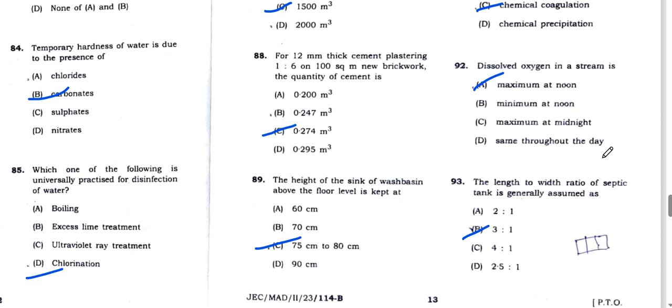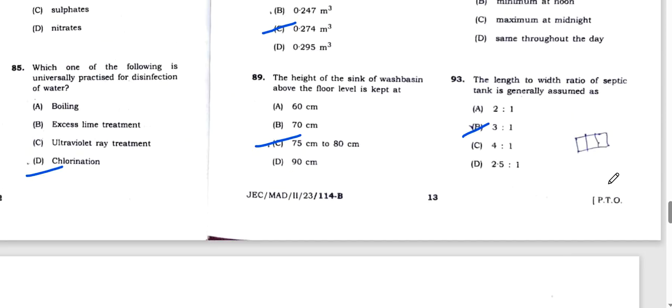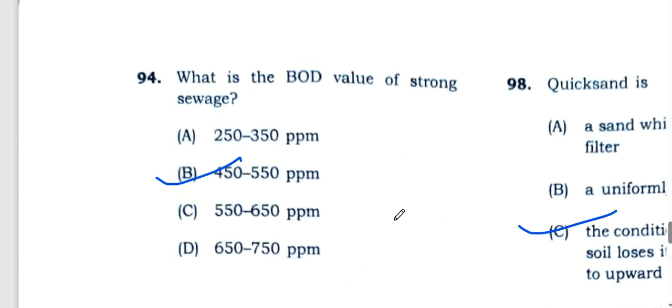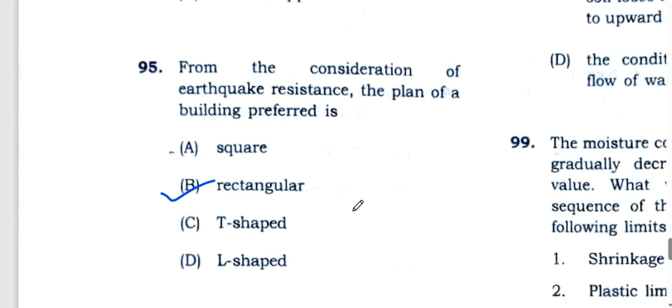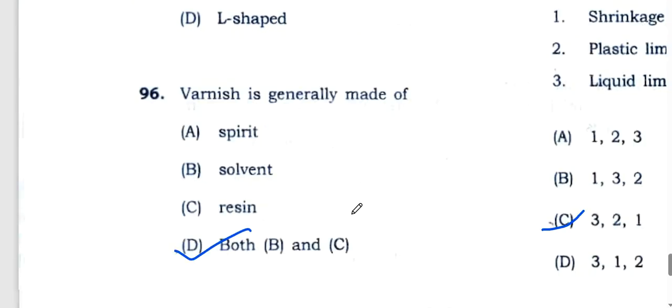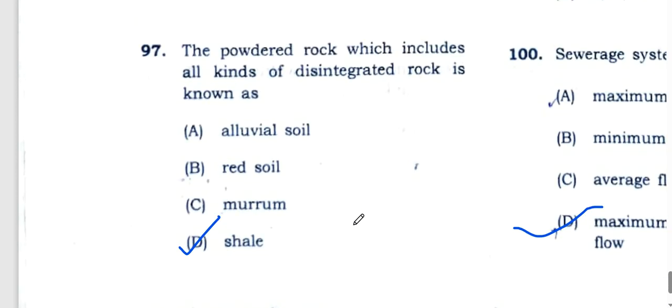Dissolved oxygen in a stream is maximum at noon, option A. The length and width ratio of septic tank is generally 3 times, length is 3 times width compared to the width, option B. The beauty value of strong bricks is 450 to 550. From considerations of earthquake resistance, the plane of the building is preferred rectangular. Varnish is made of both resin and solvent, option D.